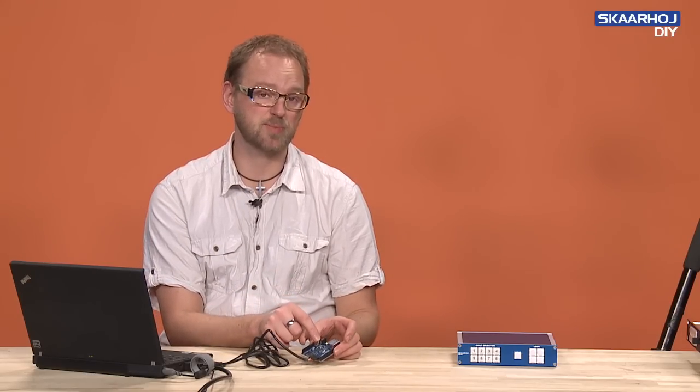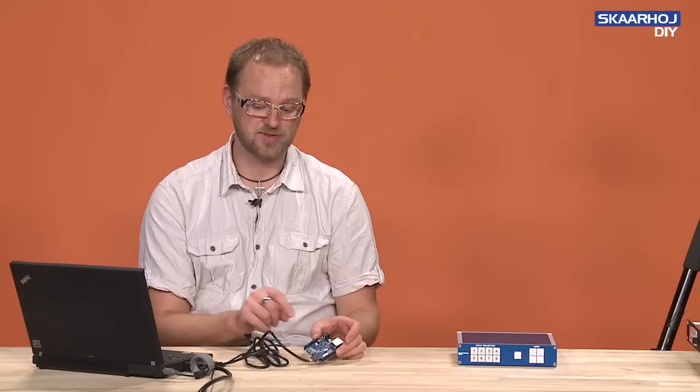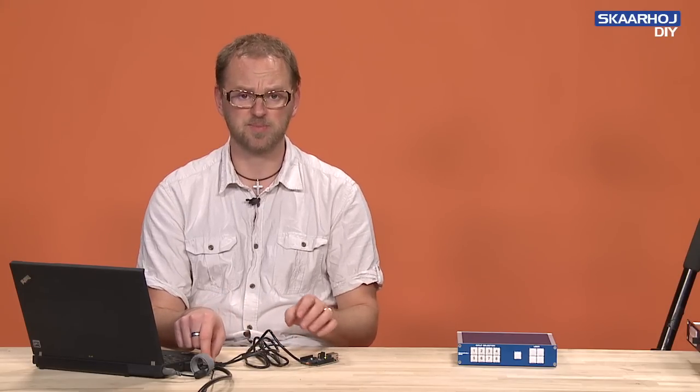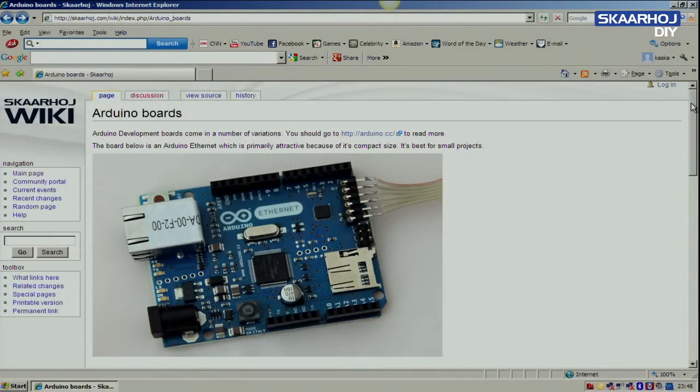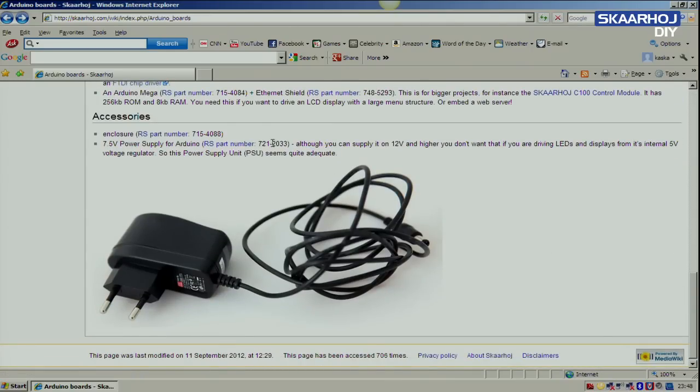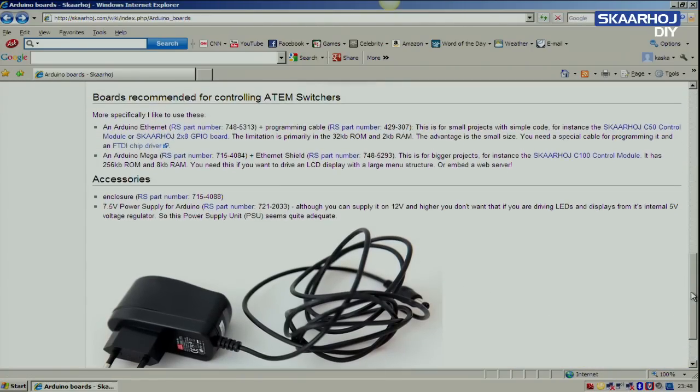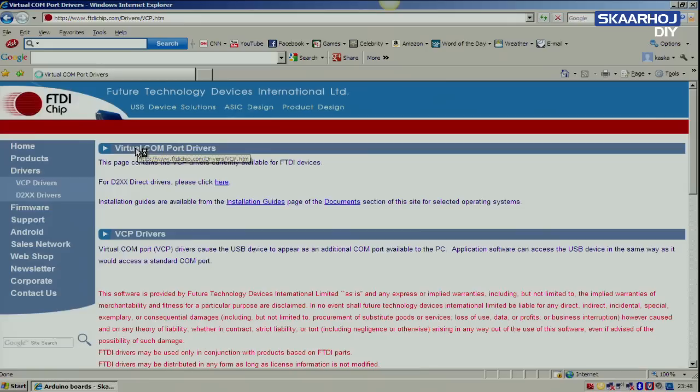You also need an FTDI driver for this particular cable, because there is no direct USB connection to this board. It has to go through a little chip inside this special cable. And for that you need a driver. So you go to the wiki page of SKAARHOJ and on our Arduino page, you find a link to the FTDI driver chip. And you click that link.